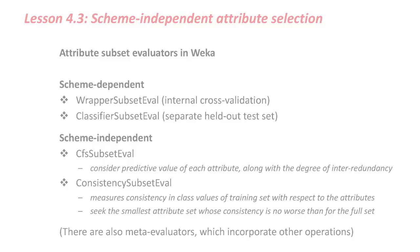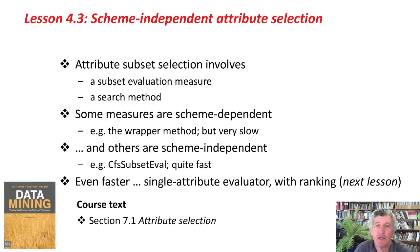In conclusion, Attribute Subset Selection involves a subset evaluation measure and a search method. Some measures are scheme-dependent, like the wrapper method, which is very slow. Others are scheme-independent, like CFSSubsetEval, which we found was quite fast. Even faster is to use a single attribute evaluator using ranking, and we're going to talk about it in the next lesson. But before that, off you go and do the activity associated with this lesson, and we'll talk to you soon.